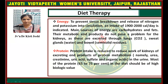Moving towards diet therapy. Regarding energy: to prevent tissue breakdown and release of nitrogen and potassium into circulation, an intake of 1,900 to 2,000 calories per day is indicated. Main sources of energy are carbohydrates and fats, whose metabolic end products do not pose a problem for the kidneys as they are excreted through the lungs as carbon dioxide, sweat glands as water, and the bowel as semi-solid residues.